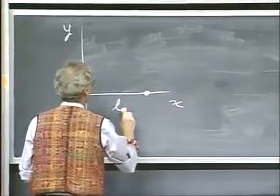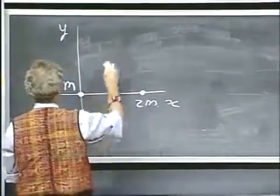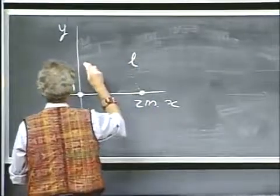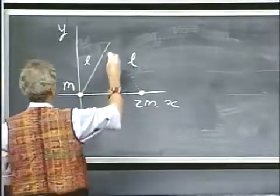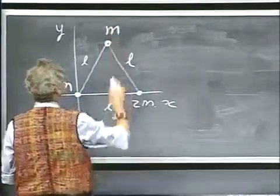At a distance l, I have here a mass 2m. This is also l, and this is also l, so this is an equilateral triangle. These are massless rods, and here I have a mass m.